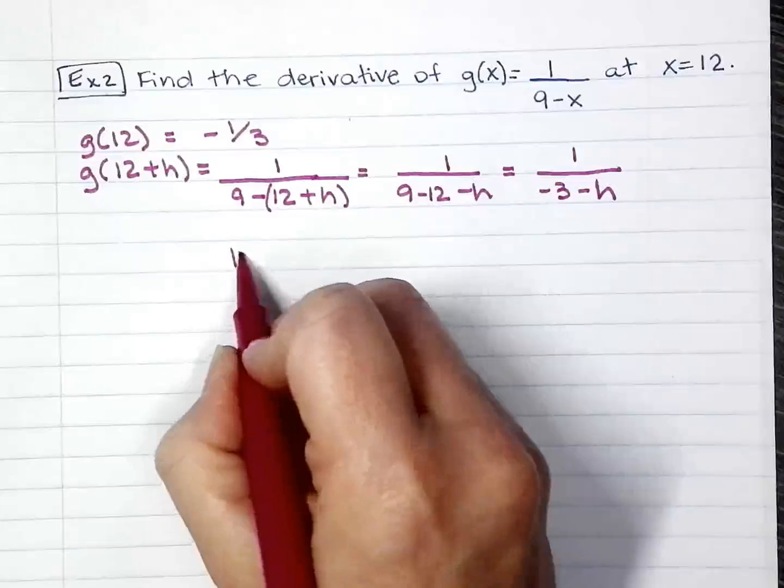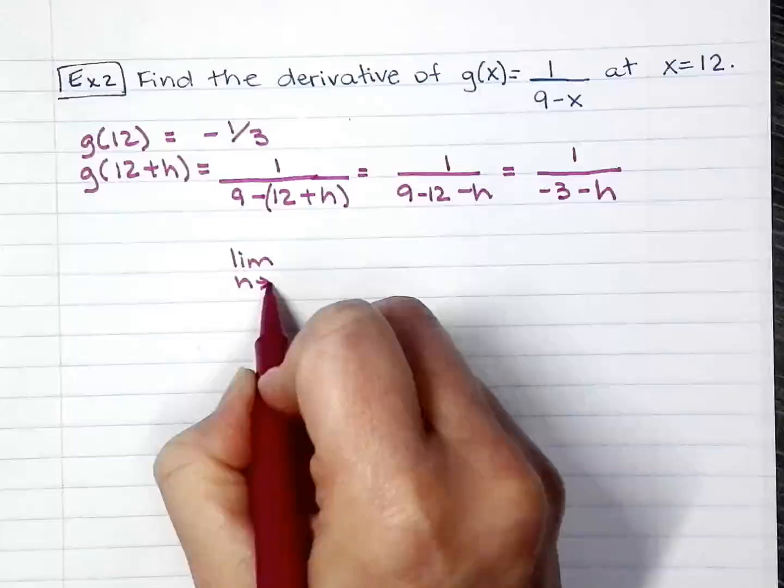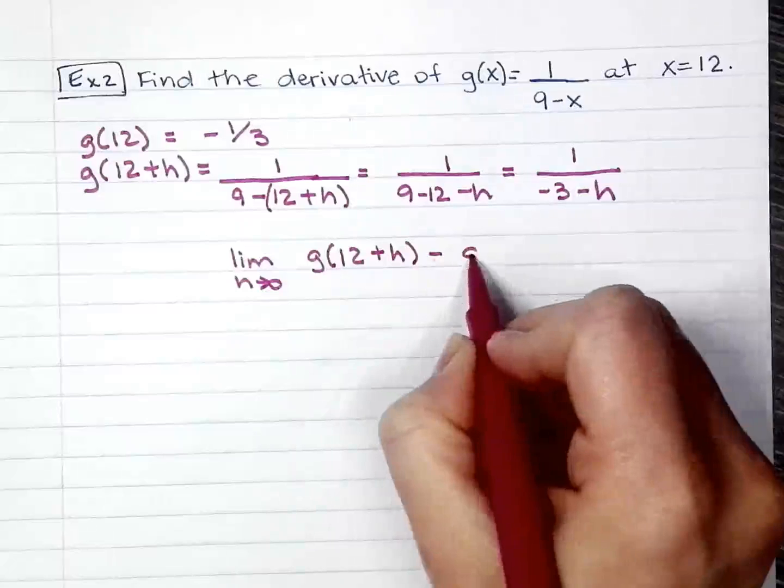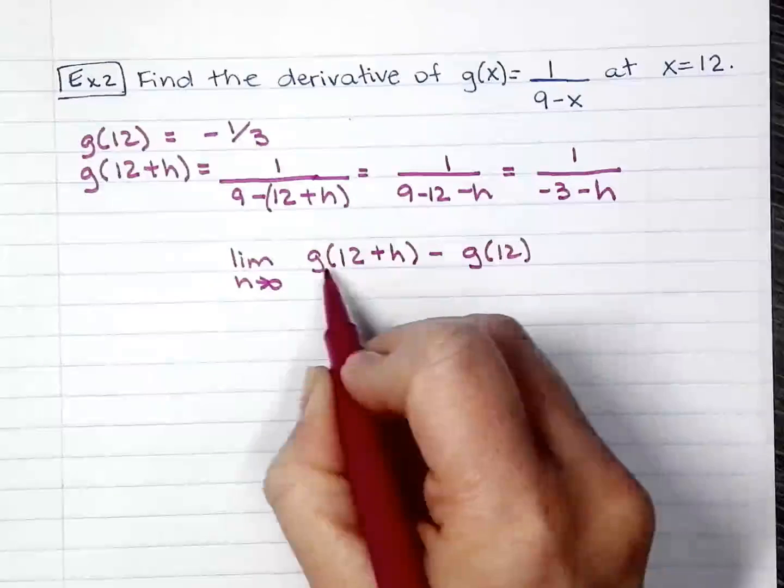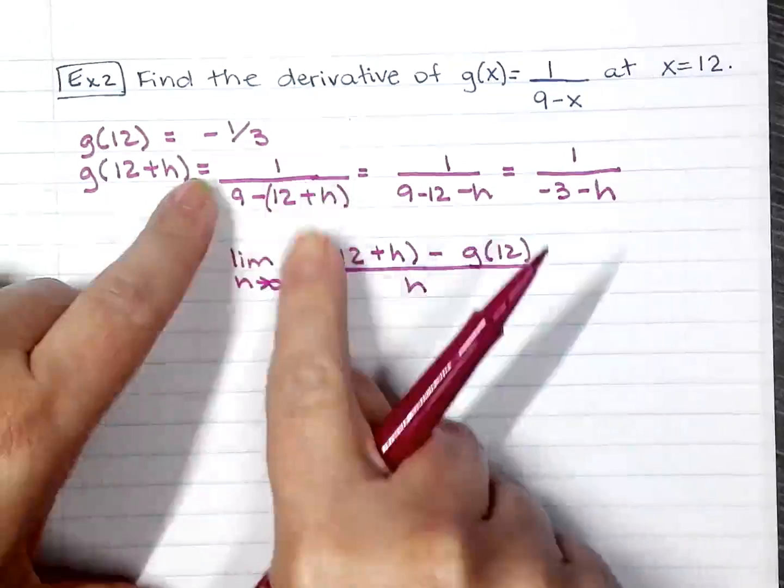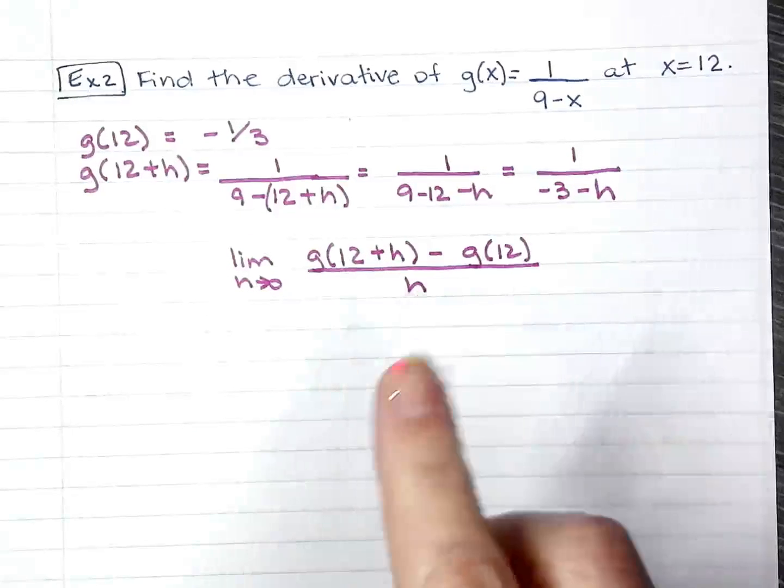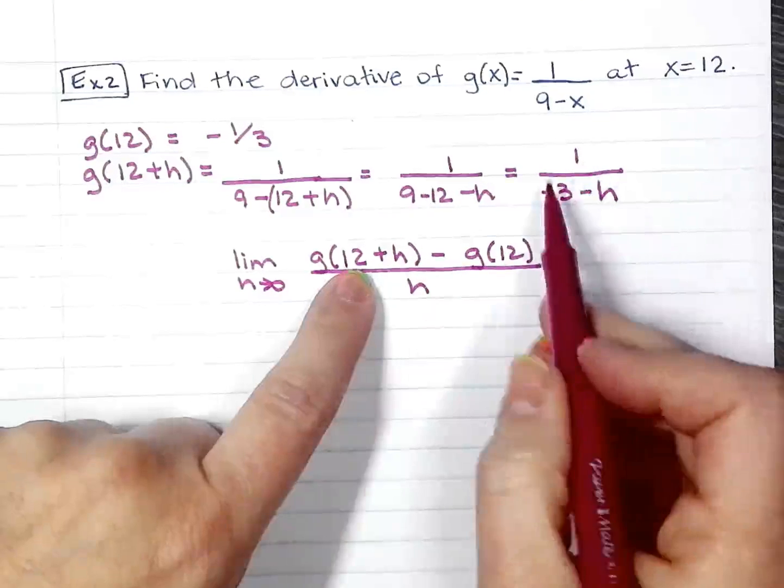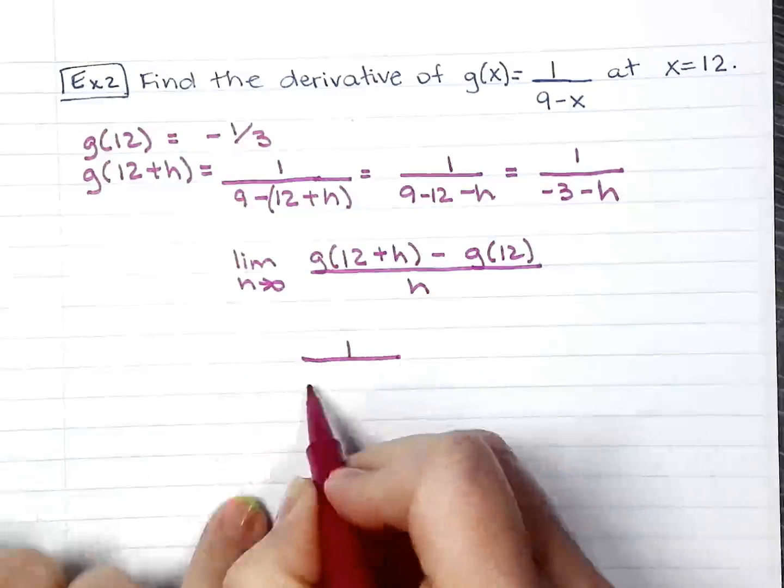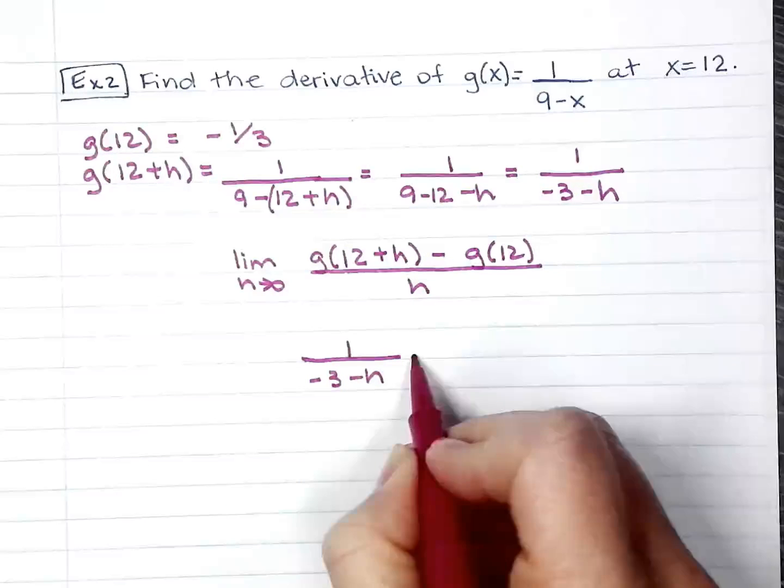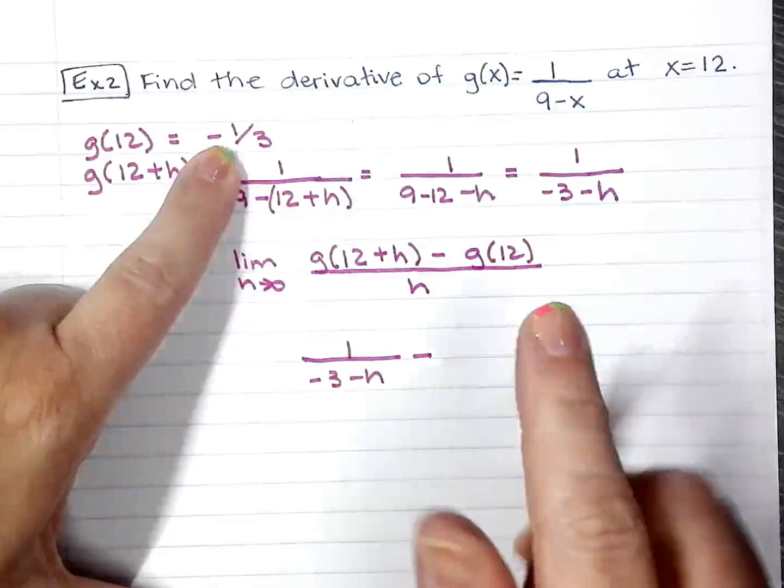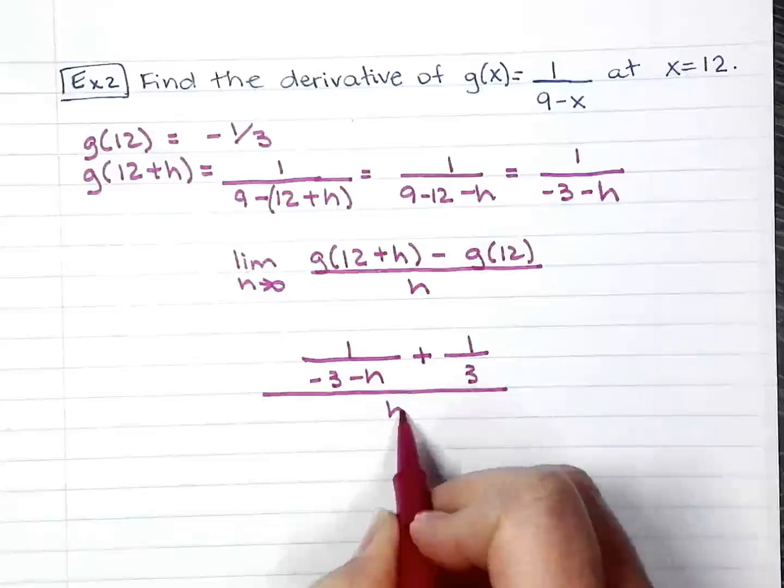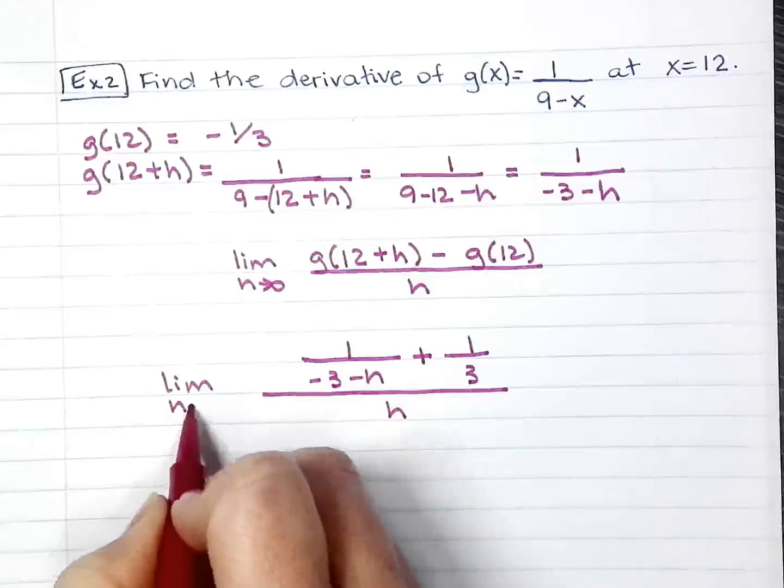So we're doing limit as h approaches 0 of g(12+h) minus g(12), everything over h. Now I have all the information I need. I'll go ahead and substitute that in the formula. So here I have this fraction. So it's 1 over -3-h minus g(12) is -1/3. So two negatives make a positive right there. Everything over h. Limit as h approaches 0.